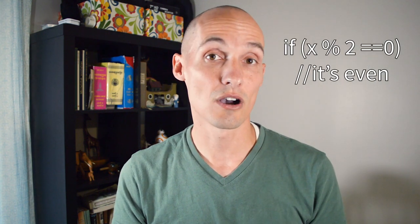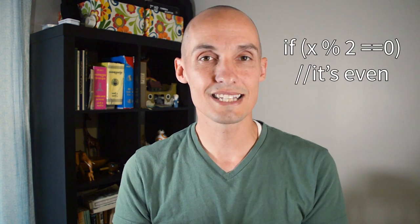You might be less familiar with the modulus operator. The modulus operator gives you the remainder after a division. So four mod two equals zero, and seven mod two equals one. The modulus operator is super handy for things like telling if a number is even or odd, or checking to see if a number is evenly divisible by another number.